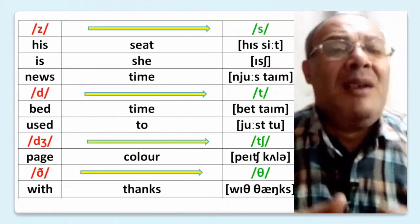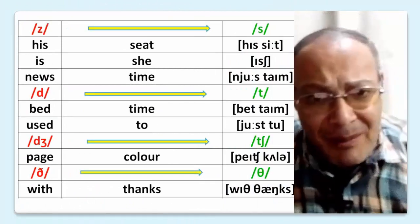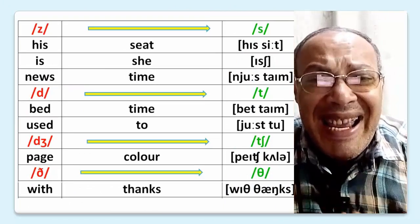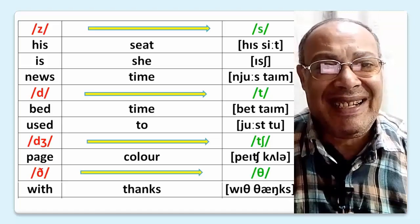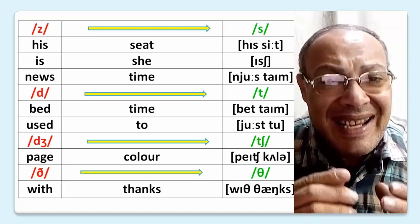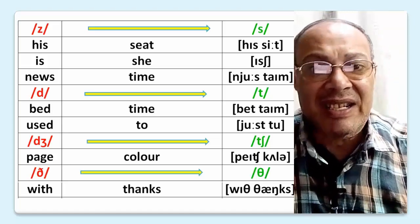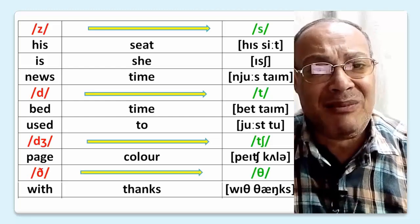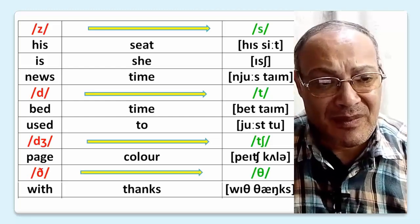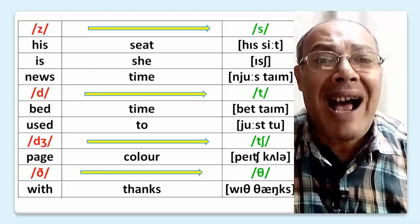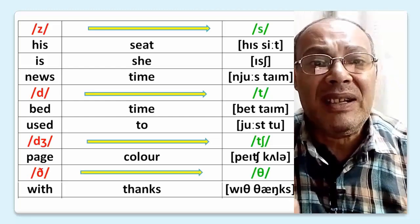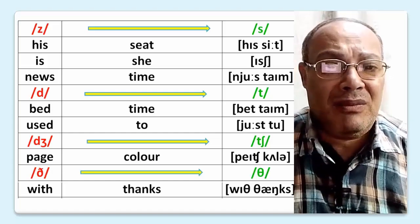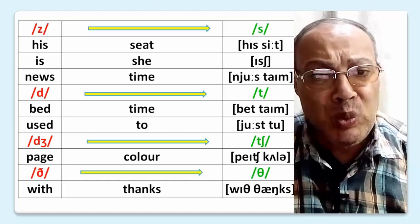Z becomes S — 'has seat', 'she'. Used time. D becomes T — 'bedtime', 'used to'.